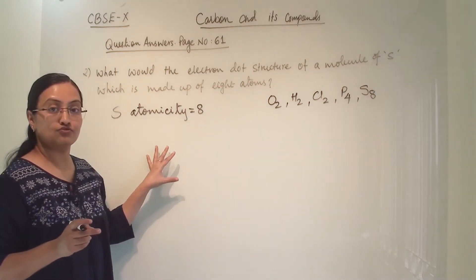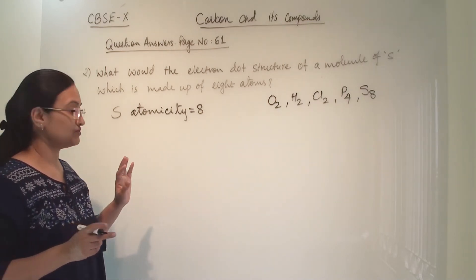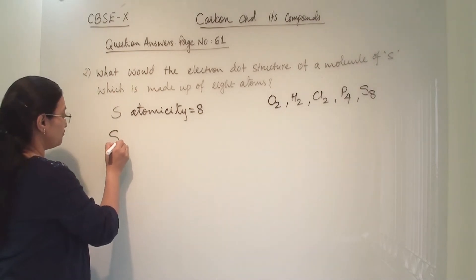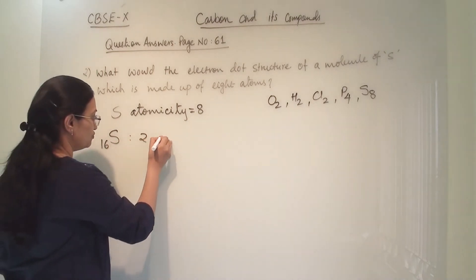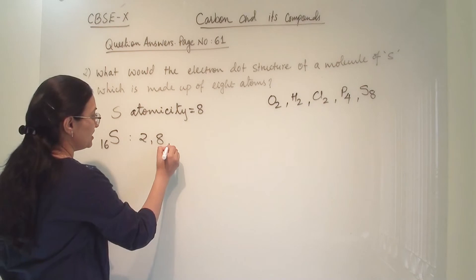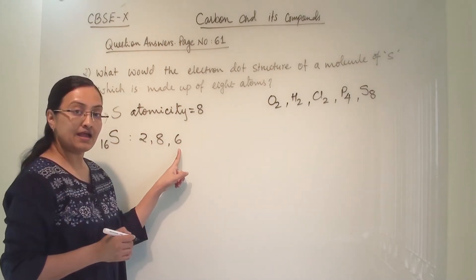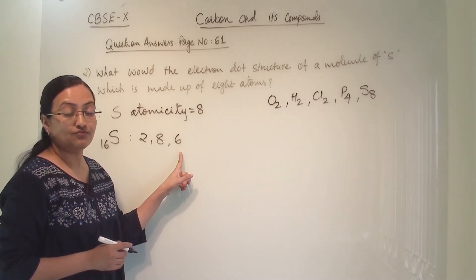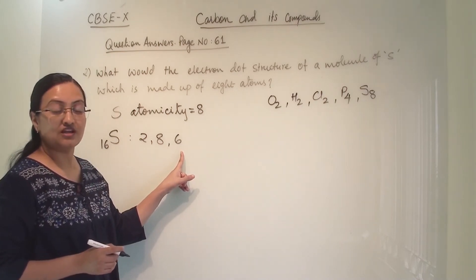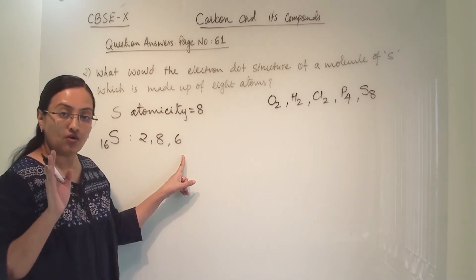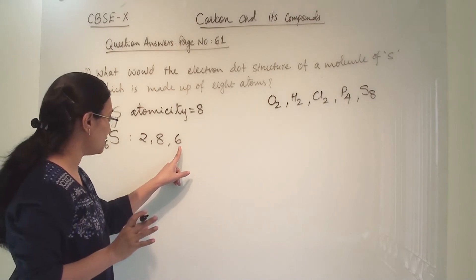They have asked us to draw the structure of the sulphur molecule in which there are 8 atoms of sulphur. First, the atomic number of sulphur is 16. Its electronic configuration is 2, 8, 6 — so K, L, and M shells, with 6 electrons in the M shell. We require 2 more electrons to fill the M shell, since the outermost shell can have a maximum of 8 electrons.